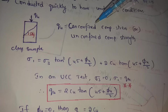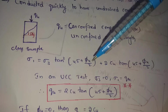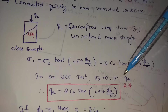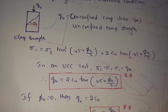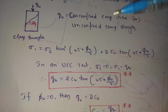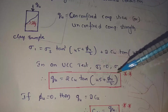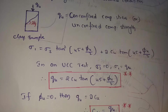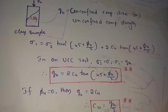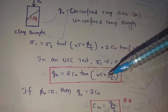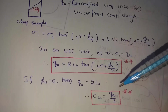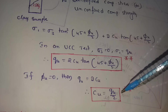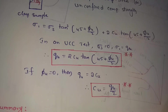qu means unconfined compression stress or strength. The formula is: qu = 2cu · tan(45 + φu/2). This is an important formula. If φu equals 0, then tan(45 + 0) = 1, so qu = 2cu. Therefore cu = qu/2. Here φu means apparent angle of shearing resistance, and cu means apparent cohesion.